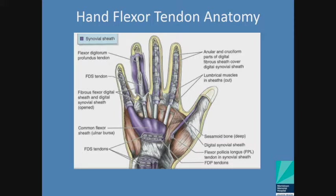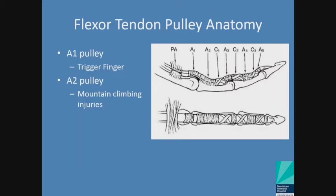Flexor tendon anatomy — this is a slide that's garnered the attention of entire textbooks, but we'll cover it briefly. Most important: your FDP tendon starts on the medial epicondyle and runs all the way to the distal phalanx, bending your PIP joint and your DIP joint. Your FDS tendon also starts on the medial epicondyle but only runs to the middle phalanx, so it only bends your PIP joint. Your pulleys keep your flexor tendons close to the underlying bone. The most important pulley to know is the A1 pulley, sitting right at the base of each digit where the digits meet the palm.